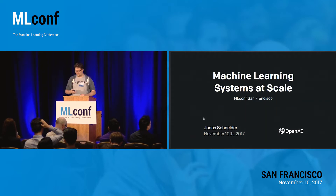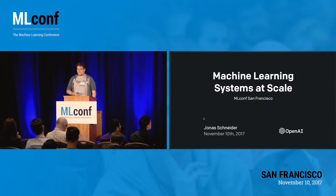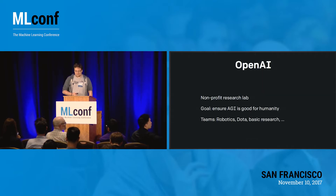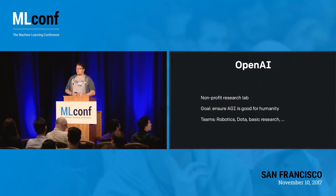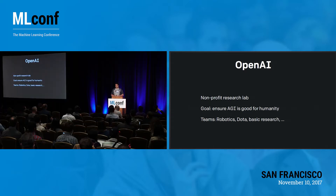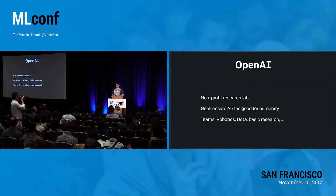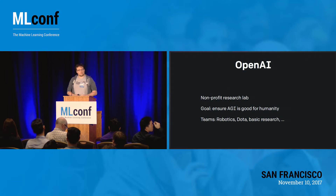I will probably refer you to our blog where you can read more things. OpenAI is a nonprofit AI research lab. Our mission is to ensure a good post-AGI future for humanity, where AGI is artificial general intelligence. A big part of our strategy for achieving that mission is to do very good technical research, staying at the forefront and pushing the state of what's possible with machine learning.